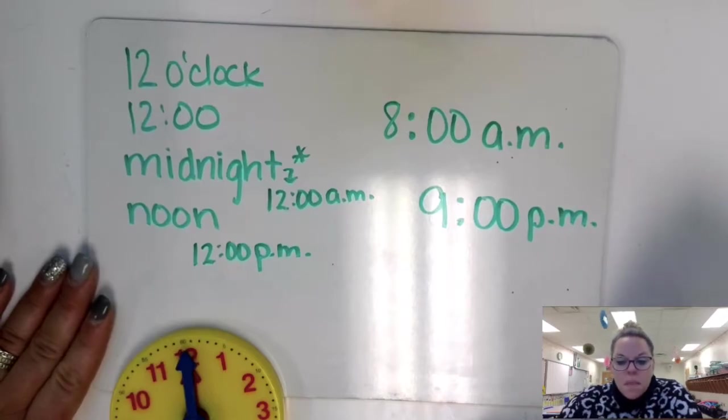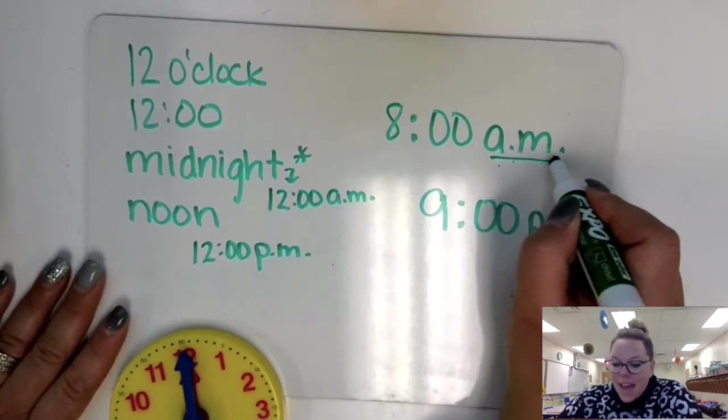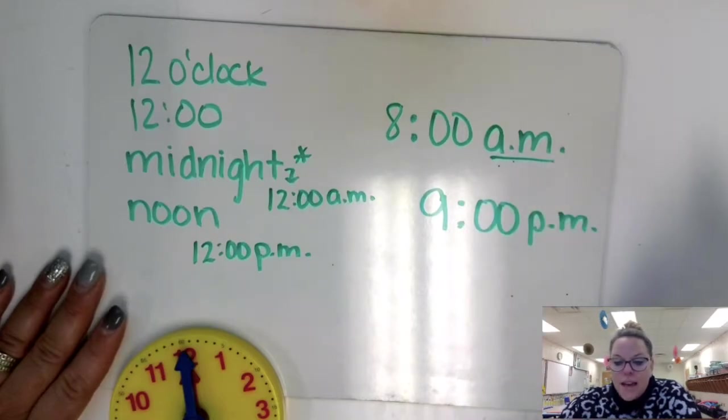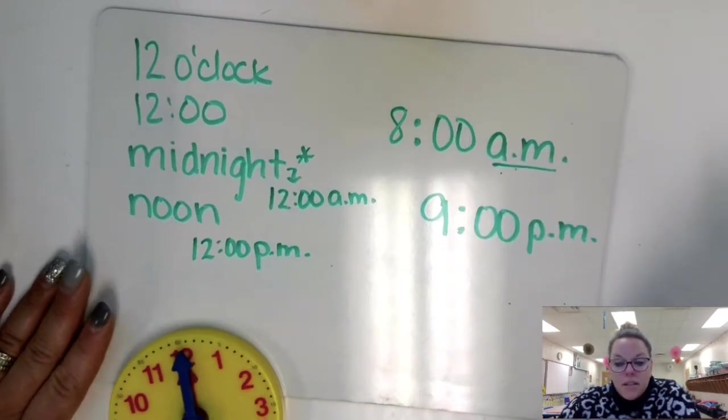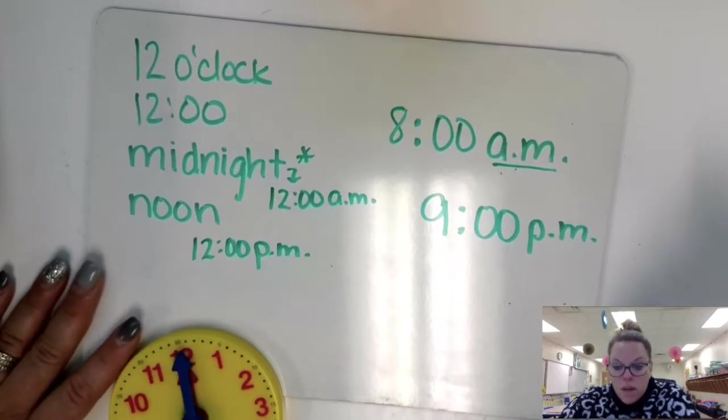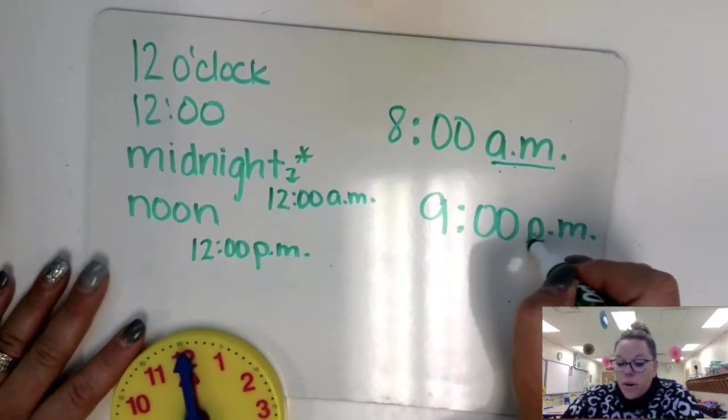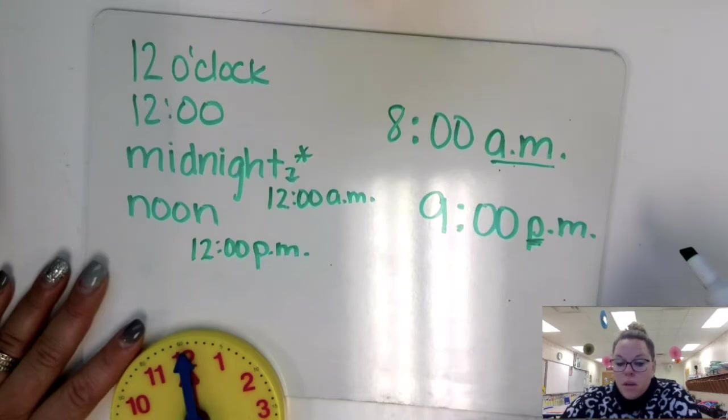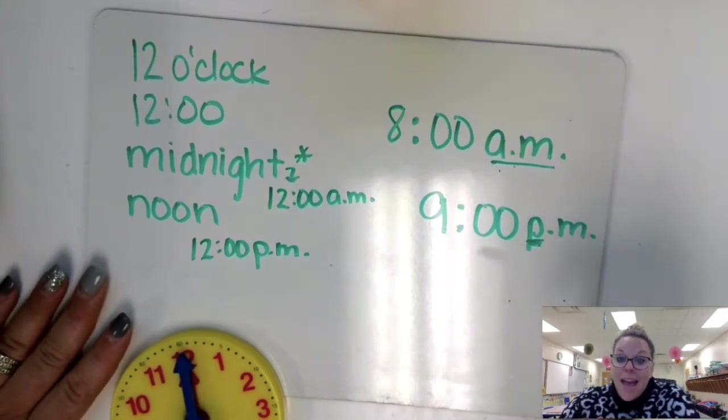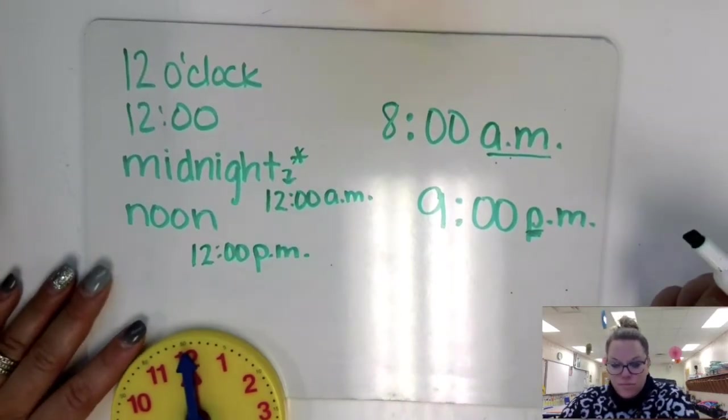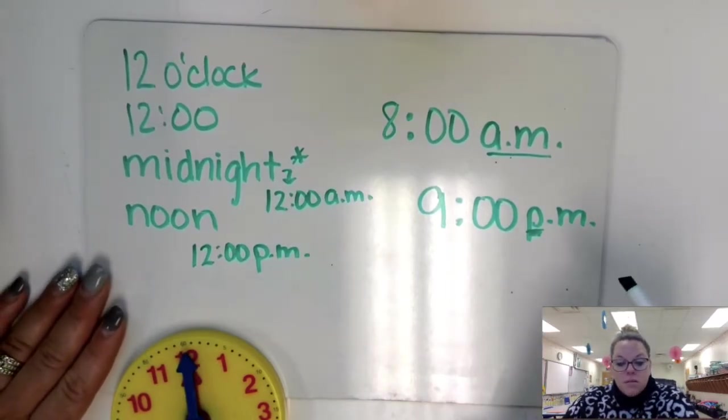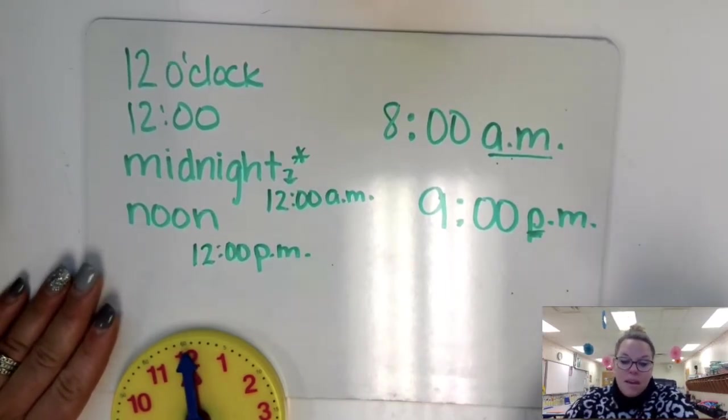Now, the abbreviation a.m. stands for ante meridium, which is a Latin term for before noon. So p.m. stands for post meridium, which is the Latin word for after noon. So we're going to practice with a.m. and p.m. times.